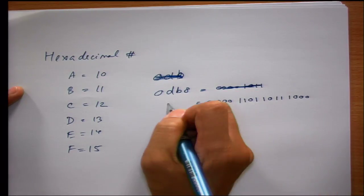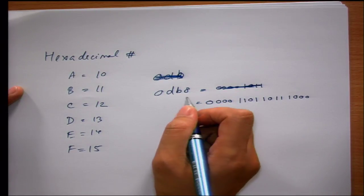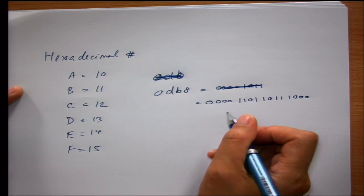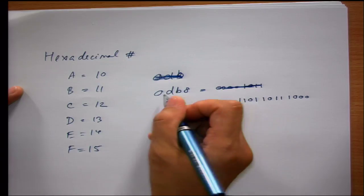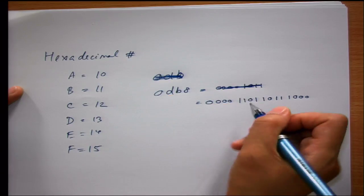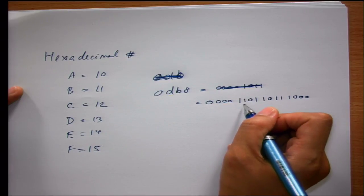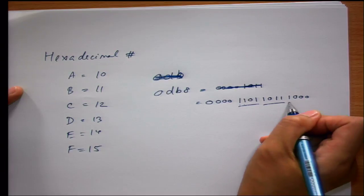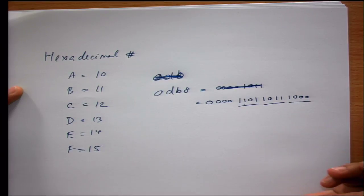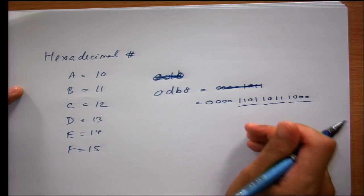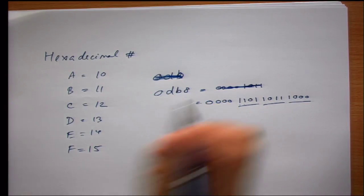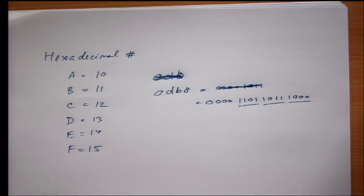So 0DB8 in hexadecimal corresponds to 0000 1101 1011 1000 in binary. This is the 16-bit representation using four hexadecimal digits.